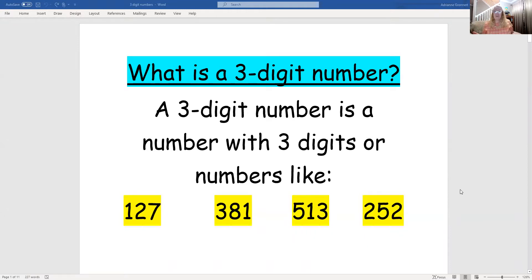What is a three-digit number? Well, a three-digit number is a number with three digits, or numbers like 127, 381, 513, and 252.